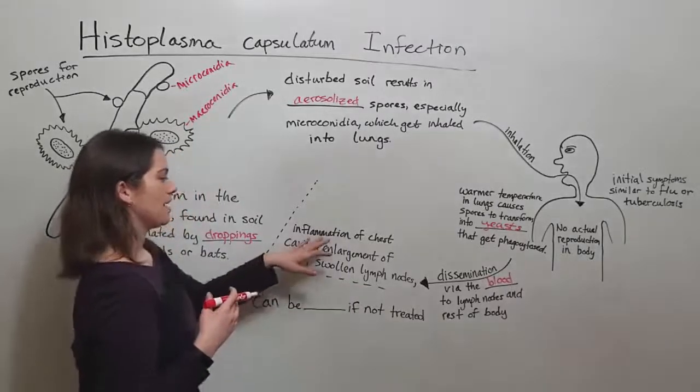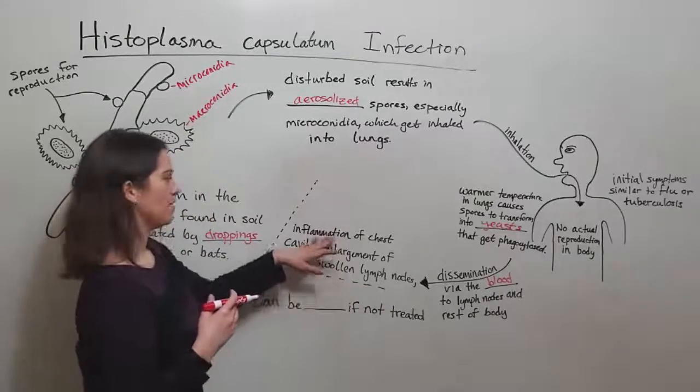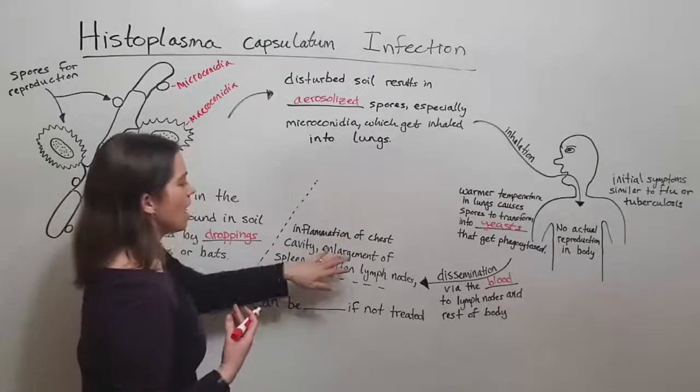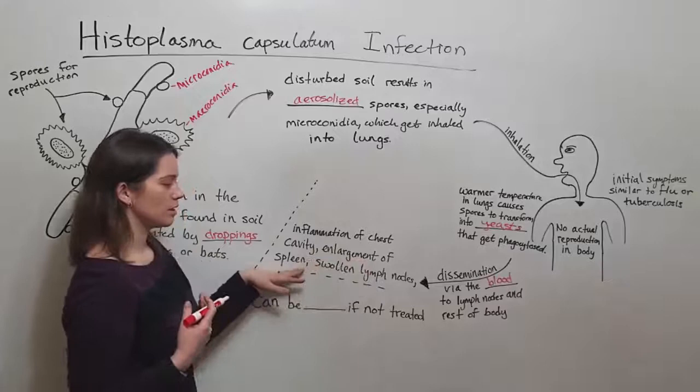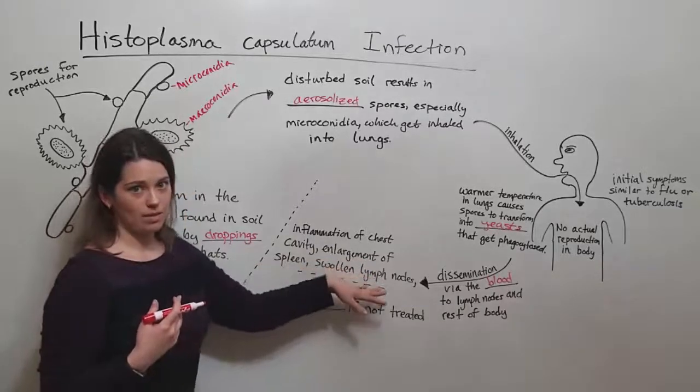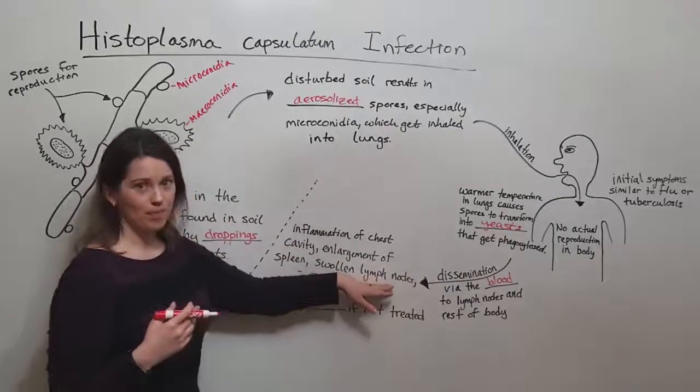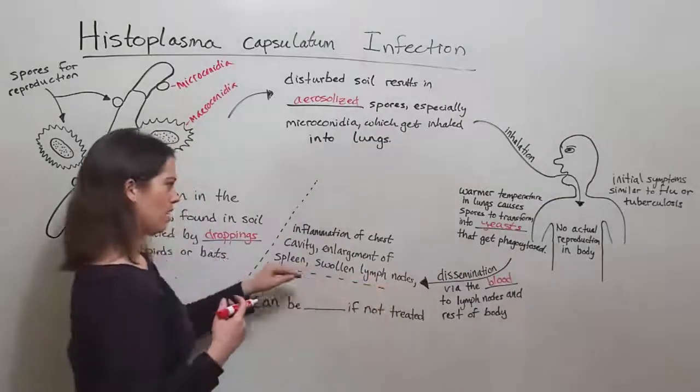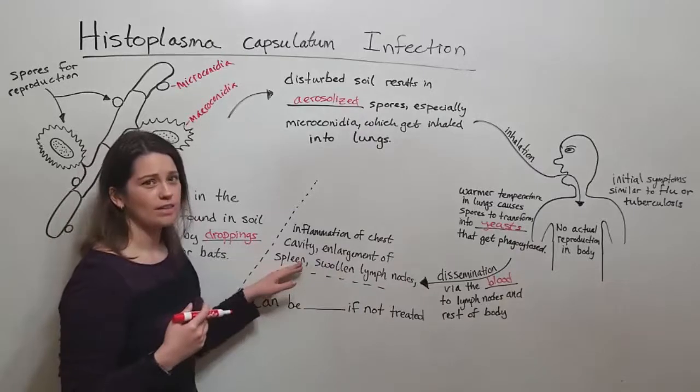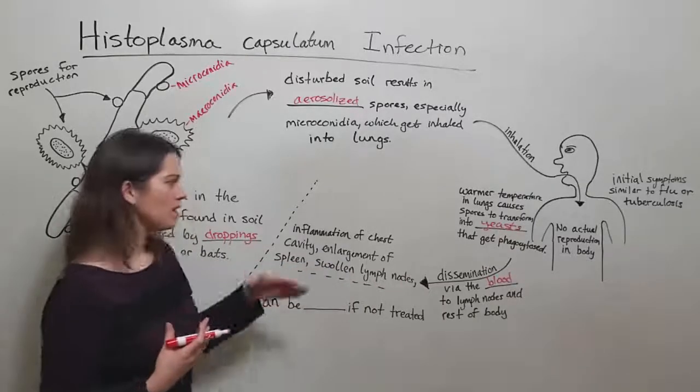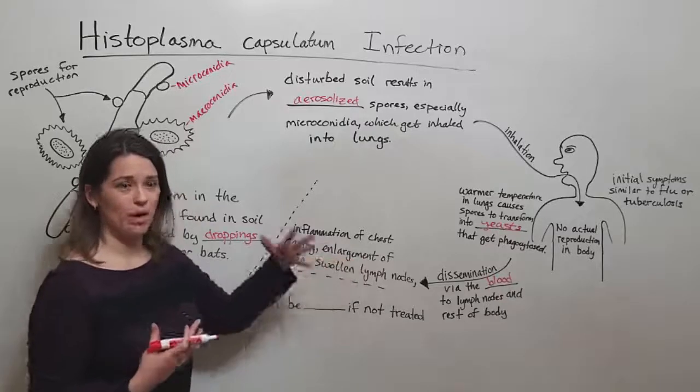And what ends up happening is we get later symptoms of inflammation of the entire chest cavity from this infection, as well as enlargement of the spleen and swelling of the lymph nodes. And this is because these phagocytes are kind of clogging up the lymph nodes, causing them to swell, being filtered out by the spleen, which really can't get rid of them very well. And that causes the spleen to be quite enlarged.